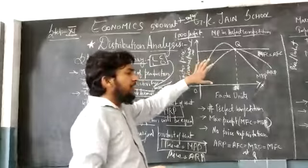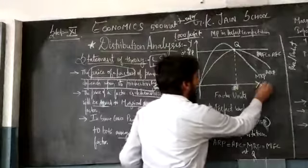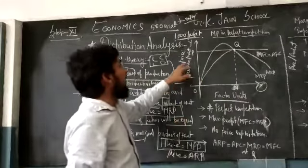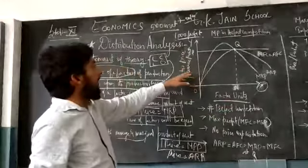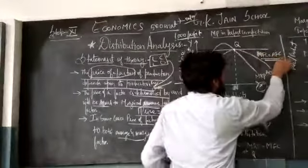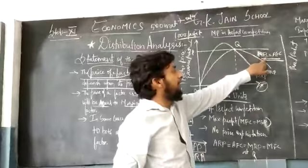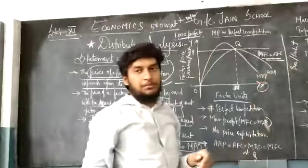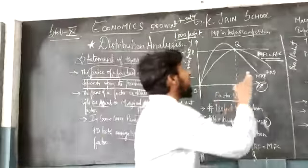See this diagram — with the help of this we understand properly. We have X-axis as factor quantity, Y-axis as factor price and revenue product. First, there is a term: MFC is equal to AFC — marginal fixed cost is equal to average fixed cost.